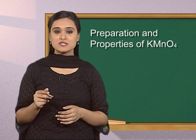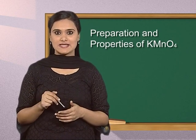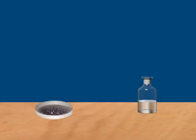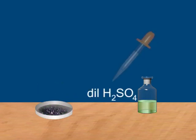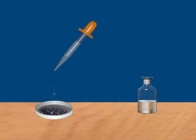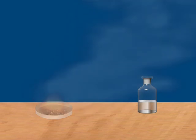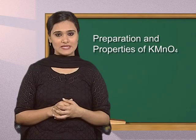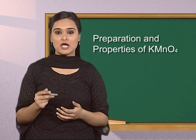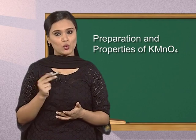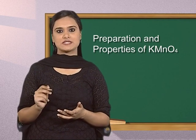Do you know what happens when dilute and concentrated sulfuric acid reacts with potassium permanganate? When crystals of potassium permanganate are placed in a bowl and dilute sulfuric acid is added, the crystals start burning — it is an explosive reaction. We will discuss the chemical reactions when potassium permanganate reacts with cool as well as hot concentrated sulfuric acid.